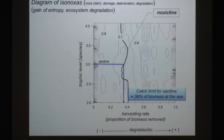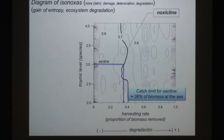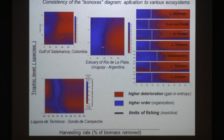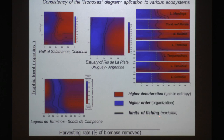This is the same information — though this diagram is actually wrong because the trophic level should be on one axis and the harvest rate on the other. The same information gives us, for each stock, the limits we can apply. We applied this criteria across different ecosystems: the Gulf of Mexico, including several coastal lagoons, the continental shoreline of Yucatan, a coral reef in Florida, the Estuario Rio de la Plata, the Gulf of Salamanca, and the combined Lagoon of Terminos and Campeche Sound.